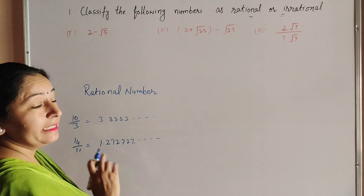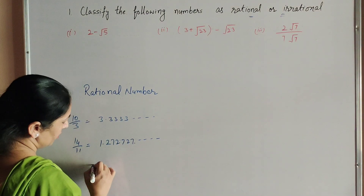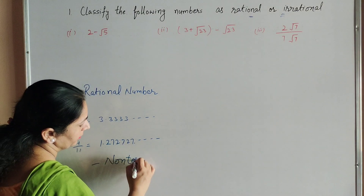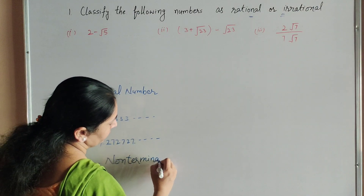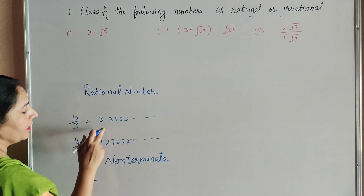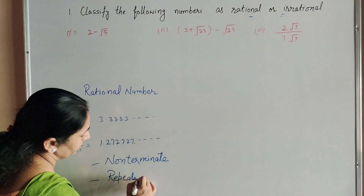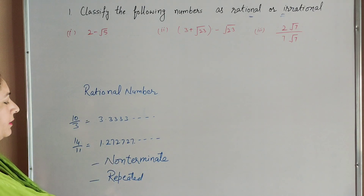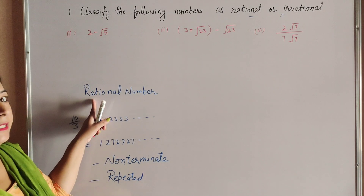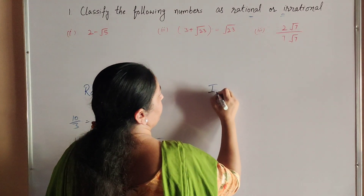In both cases the answer is non-terminating because it is never ended. The second point is that in both divisions we get a repeated number. So when dividing, if the number is non-terminating and repeated, that is a rational number.